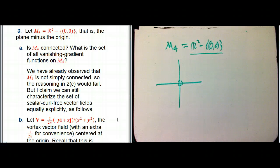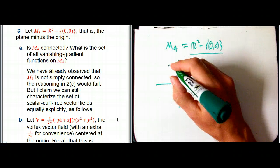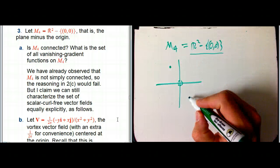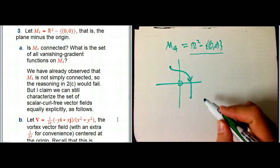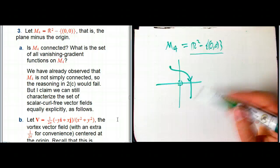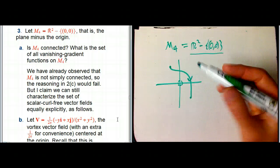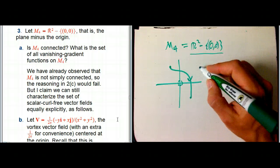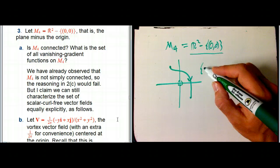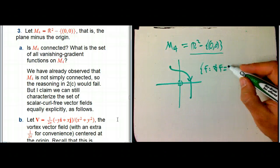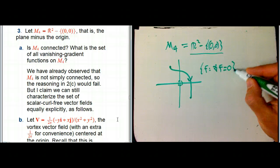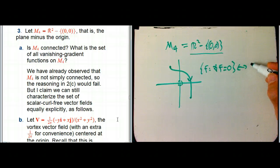First of all, is M4 connected? Yes, it sure is. Two opposite points can't be connected by a straight line, but it's certainly connected by a curve. And so our argument about vanishing gradient functions still says that the set of f such that the gradient of f equals zero — they're just constant, and so they're bijective, in other words one-to-one correspondence with ℝ.